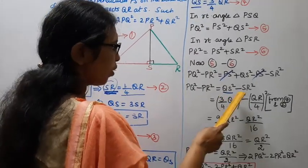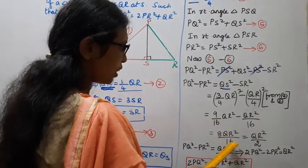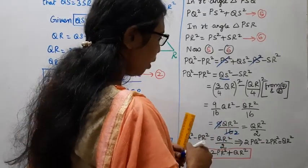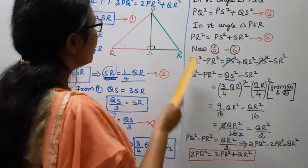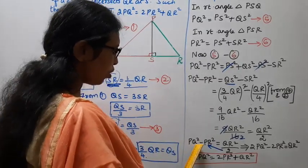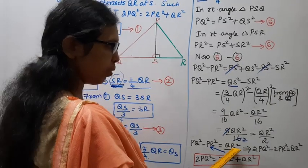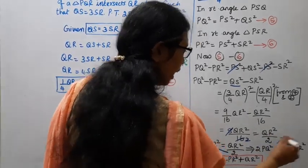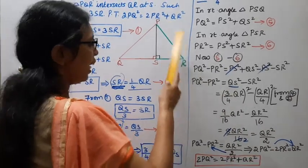Substituting: QS square equals 9 QR square by 16, and SR square equals QR square by 16. So QS square minus SR square equals 9 QR square minus QR square over 16 equals 8 QR square by 16 equals QR square by 2. Cross multiplying: 2PQ square minus 2PR square equals QR square. Therefore 2PQ square equals 2PR square plus QR square. Answer proved.